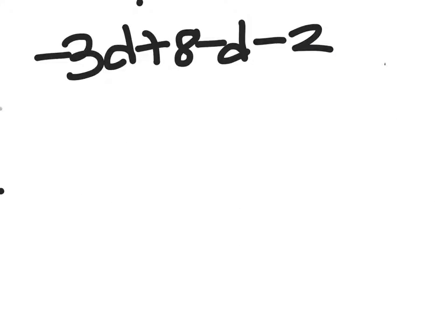First we change these to the opposite and addition. As you can see, some of these have a variable. You want to add the variables together and the ones without variables together. So you move these around where it's negative 3d plus negative 2.